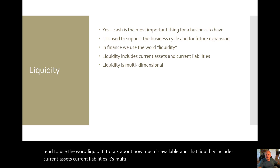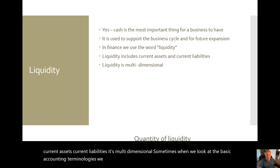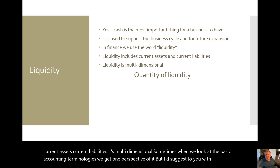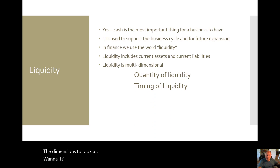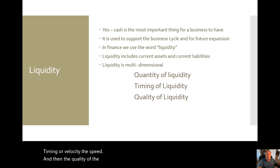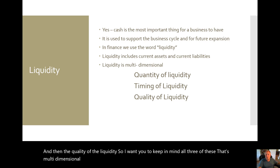Sometimes when we look at the basic accounting terminologies, we get one perspective of it. But I'd suggest to you with liquidity, the dimensions to look at are quantity, timing or velocity — the speed — and then the quality of the liquidity. So I want you to keep in mind all three of these: that it's multi-dimensional, especially in the management of the cash of the firm. It's all about the different dimensions. You can't just look at one.